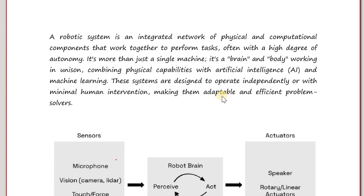A robotic system is not a single system. It is an integrated network of physical and computational components that work together to perform tasks with a very high degree of autonomy. It is not a single machine — it is rather brains and body working together.